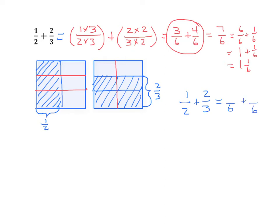Both fractions get a denominator of 6. Instead of going through the whole procedure of multiplying both the numerator and denominator by 3, I can cross multiply. I multiply 3 times 1 and get 3 — that becomes my numerator. Now for the other side: 2 times 2 is 4. So we end up with 3 plus 4, giving us 7 sixths. We know 7 sixths can be decomposed into 1 and 1 sixth.